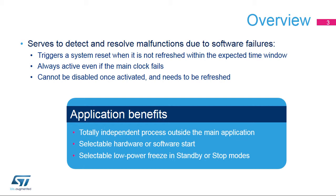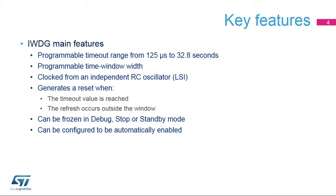One of the main benefits for applications is its ability to run independently from the main clock. The Independent Watchdog offers a wide range of timeout values, from 125 microseconds to 32 seconds. It is clocked by a 32 kHz RC oscillator, which cannot be disabled when the Independent Watchdog is enabled. It generates a reset when the program timeout value elapses, or when a watchdog refresh occurs outside a program time window.